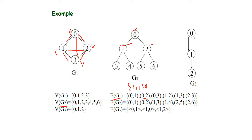For graph G2, the vertices are 0, 1, 2, 3, 4, 5, and 6, and E(G2) is all the connecting lines between each vertex. For G3, the nodes are vertices 0, 1, and 2. The edges are represented as ordered pairs such as (0,1) and (1,0), but since this graph has direction, it is better to represent them as directed pairs like (1,2).